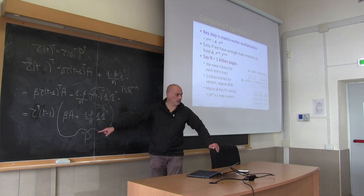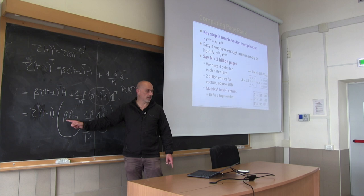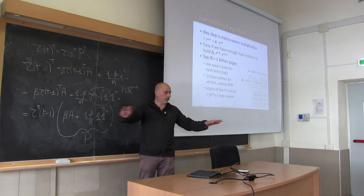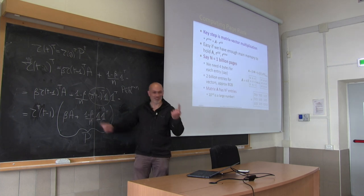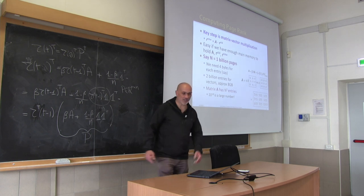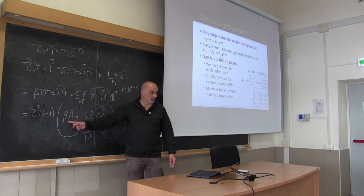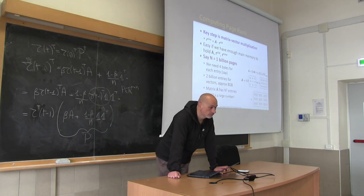Then we remember this trick: matrix P consists of a first part — a scaled-down version of matrix A where every entry is multiplied by beta — and a second part which is a flat uniform matrix. To store a flat matrix I just need to store one value. So I only need to store A, which is sparse.